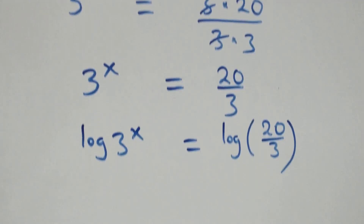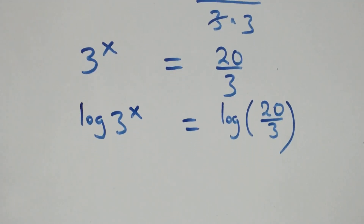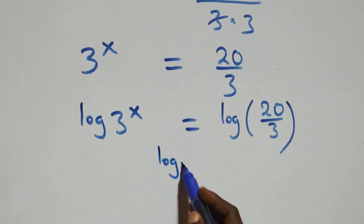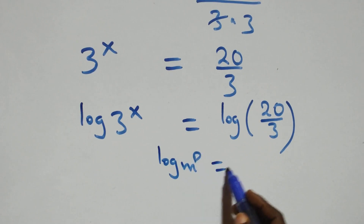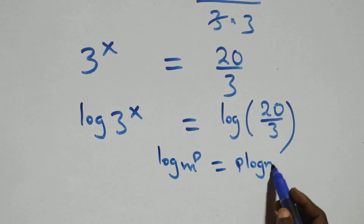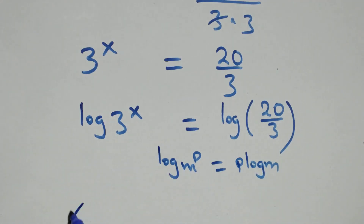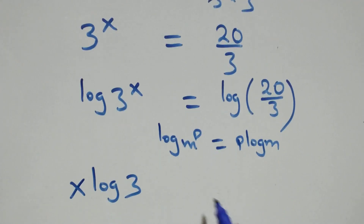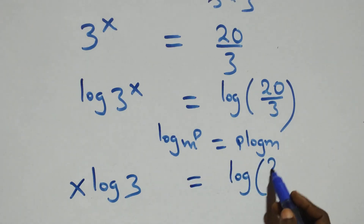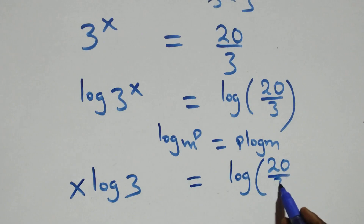We apply the power rule of logarithms: when we have log of n raised to the power p, this is the same as p times log n. So here we have x times log three equals log of twenty over three.